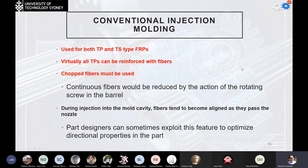Conventional injection molding is used for both thermoplastics and thermosets. Virtually all thermoplastics can be reinforced with fibers, though chopped fibers must be used in these cases — and sometimes powders are used, referred to as nanotechnology. The continuous fibers are reduced by the action of the rotating screw in the barrel, and during injection into the mold cavity the fibers tend to become aligned as they pass through the nozzles.